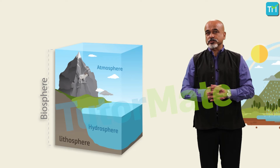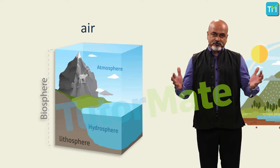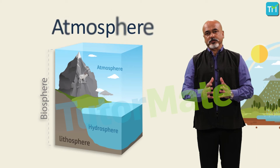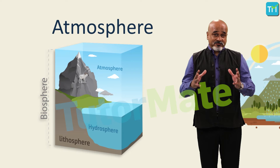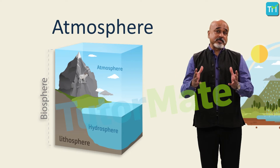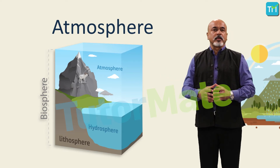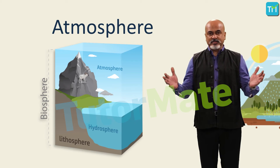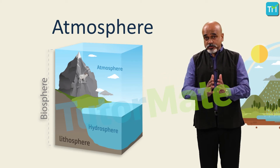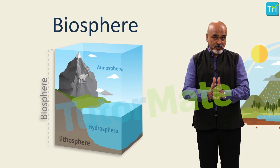The most important resource we have is air. Air is everywhere — it covers the entire planet like a blanket and forms the atmosphere. Keep in mind that living things are only found where all three elements — the lithosphere, the hydrosphere, and the atmosphere — exist together. This life-supporting zone is known as the biosphere.